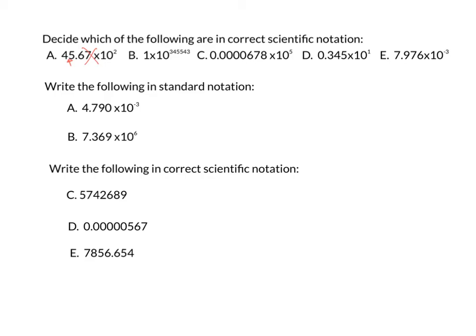Pause the video to do part B. Letter B is correct — even though there's no decimal place shown, there is a whole number that would be in front of a decimal place if it were shown. Pause the video for C. Part C is incorrect because there is no whole number in front of the decimal place — we see just a zero there — and it has to be a number between 1 and 9, but not 10.